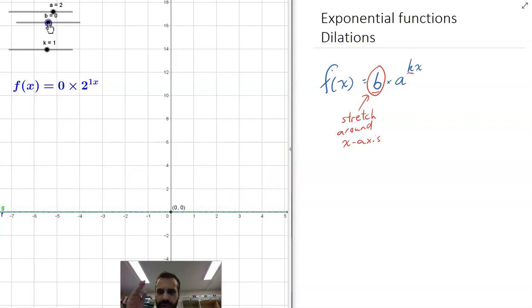If I get to 0, if I multiply a whole function by 0, I just get a flat line. But then when b becomes negative, you can see that it flips it around.